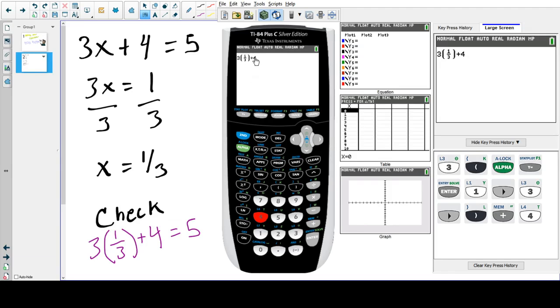1/3, close parentheses, plus 4. Doesn't this look the exact same as what's written? When I click enter, I get 5. So I can now go back to my test question. I already know that on my calculator it's 5. Does 5 equal 5? Yes, I'm done.